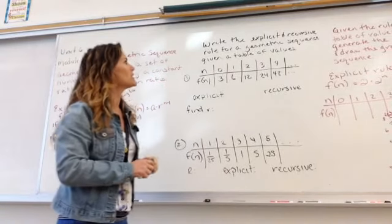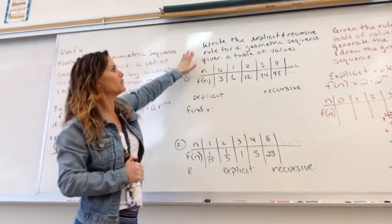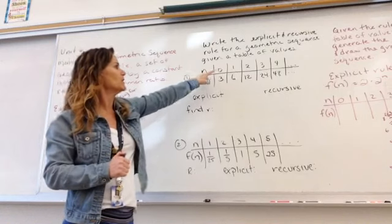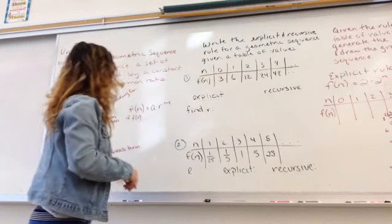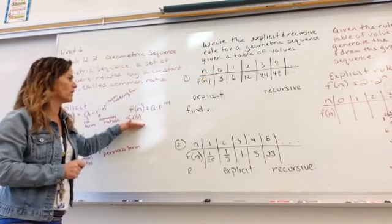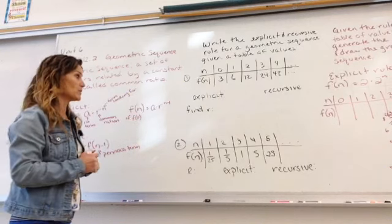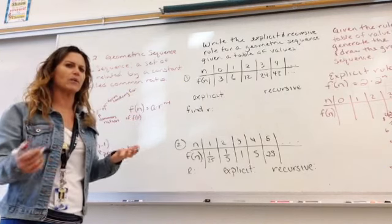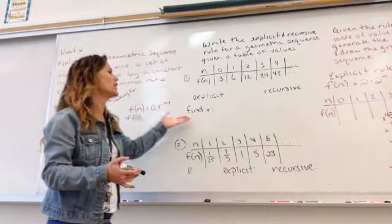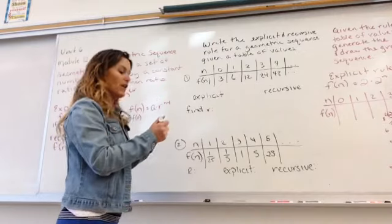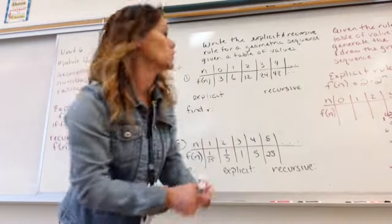For example, we write the explicit and recursive rule for a geometric sequence given the table. Notice we have a 0, that means we need to use this formula when we write the explicit. First thing, like we had to find the common difference, we have to find our common ratio. To find the common ratio, it's pretty simple.